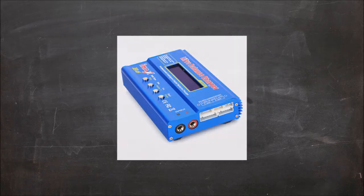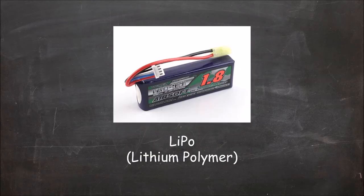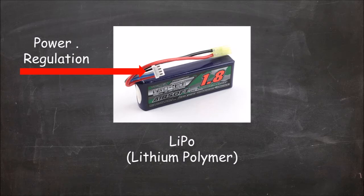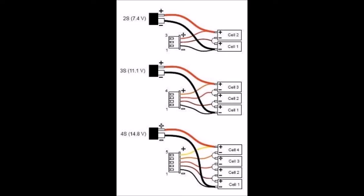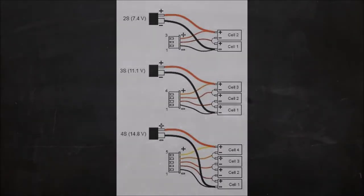LiPos also differ from NiMH in that they either use a balance charger or a smart charger. LiPos also have two connectors, one that regulates power between the cells and the other to draw out power. For a balance charger, you only need to connect the white power connector. This method will take significantly longer than a smart charger. A smart charger utilizes both connectors. This allows a shorter charge period.